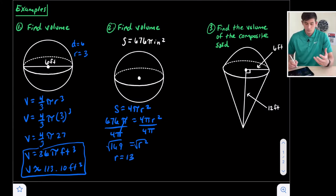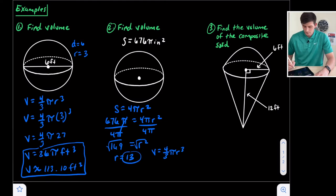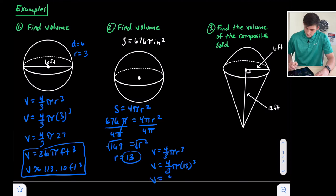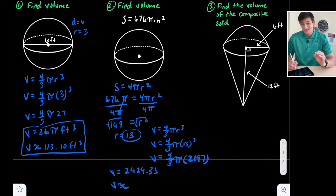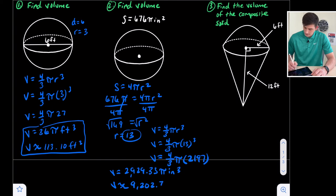Now we can use 13 to find the volume. Volume equals four thirds pi r cubed, and we plug in 13 for r. So volume equals four thirds pi times 13 cubed. 13 cubed gives us 2,197. So we have four thirds pi times 2,197. We multiply that by four and divide by three, giving us a volume of 2,929.33 pi cubic inches. Multiplying by pi for our decimal approximation gives us 9,202.77 cubic inches. That's our volume for number two.